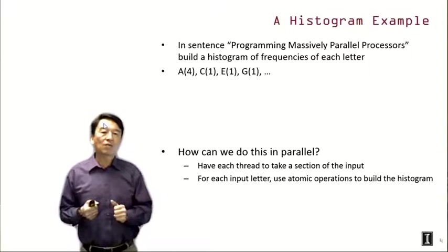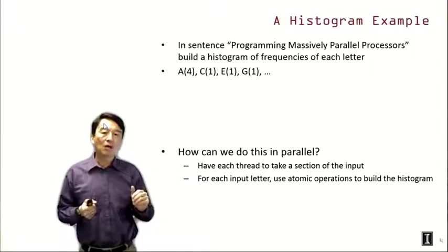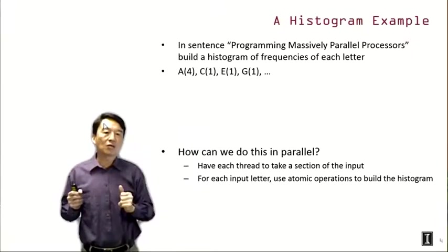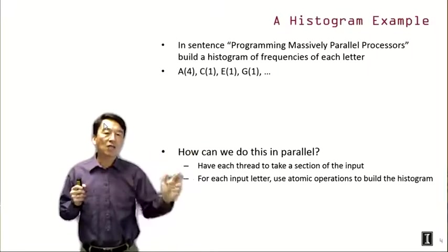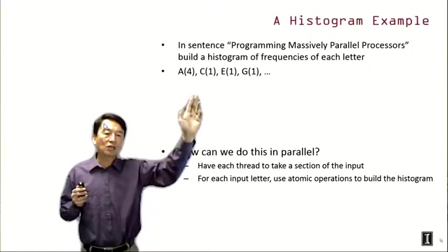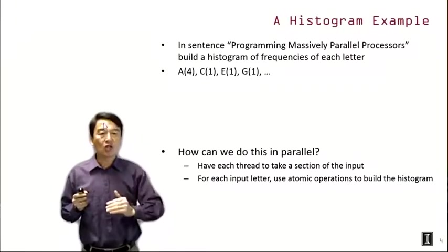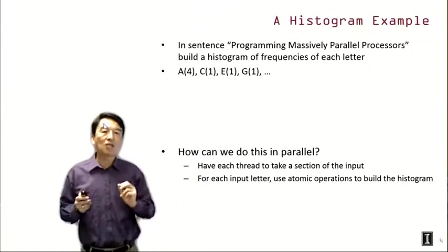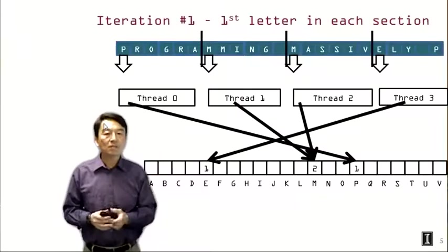So the question is, how do we do this in parallel? We can use a very simple approach, having each thread take a section of the input. For example, if we need to use four threads to process this phrase, we can just cut the input into four sections. And then for each input letter in each section, we use an atomic operation to build a histogram. And I will come back to this atomic operation point in the next lecture. So I just want to put a forward reference here to keep it, kind of give you a little bit of alarm, so that you will expect what's going to happen in the next few lectures.